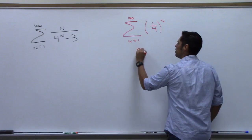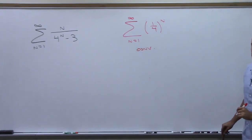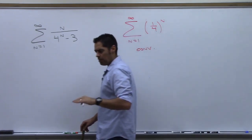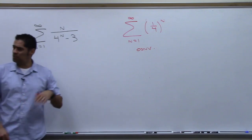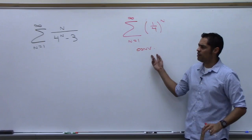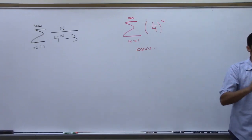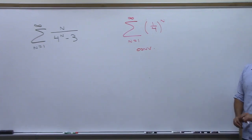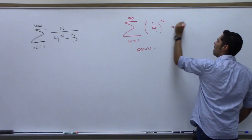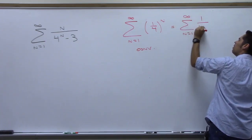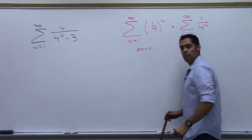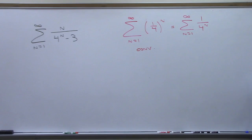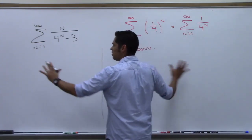I'm comparing this to a convergent series. Now I have choices: part one (inequality), part two (divergent comparison — can't use since this is convergent), or part three (limit). Do we use part one or part three? You want to do the inequality? What's the inequality you'd have to show? That a_sub_n ≤ b_sub_n.